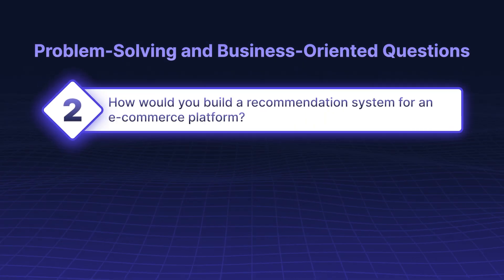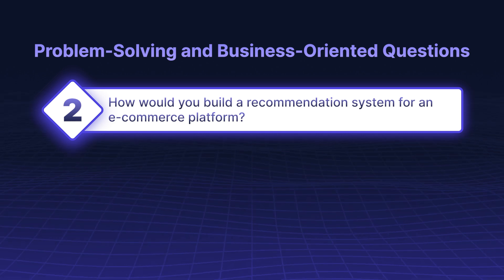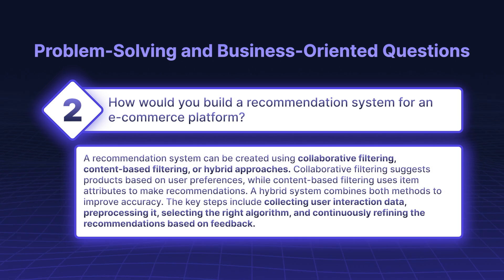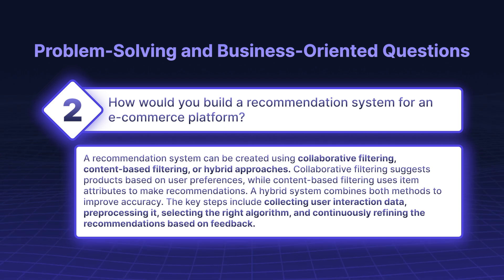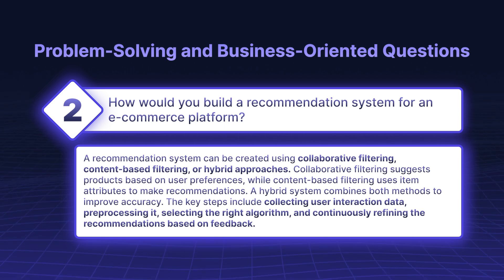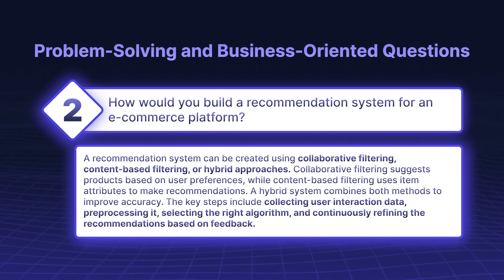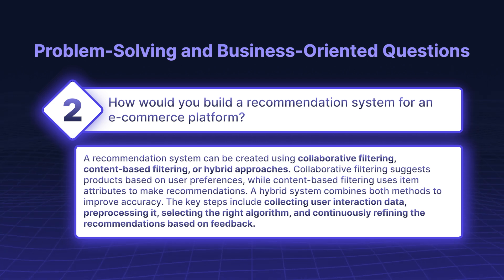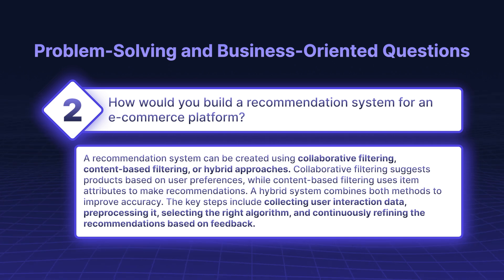How would you build a recommendation system for an e-commerce platform? A recommendation system can be created using collaborative filtering, content-based filtering, or hybrid approaches. Collaborative filtering suggests products based on user preferences, while content-based filtering uses item attributes to make recommendations. A hybrid system combines both methods to improve accuracy. The key steps include collecting user interaction data, pre-processing it, selecting the right algorithm, and continuously refining the recommendations based on feedback.